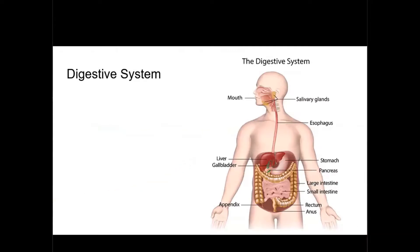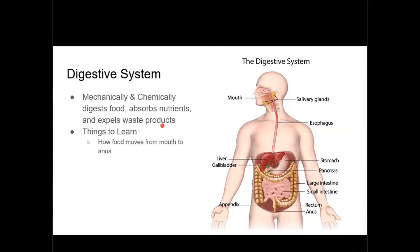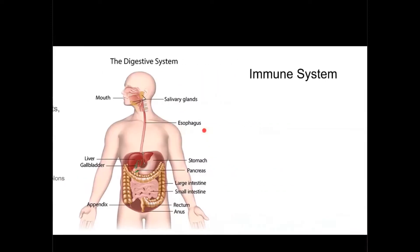Next, we're going to talk about the digestive system. The digestive system mechanically and chemically digests food, absorbs nutrients, and expels waste products. Some key things you want to know are how food is moved and processed by the human body, the common enzymes that are used in the digestion process, and of course, the various diseases of the stomach and colon.